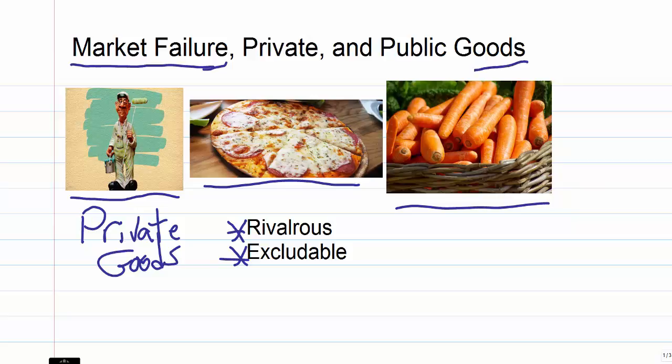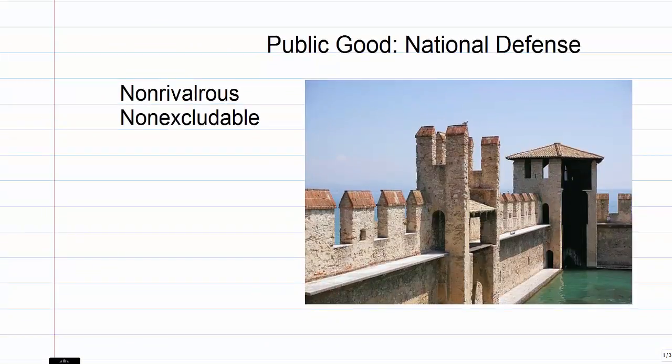Now let's talk about public goods. This is where the market failure idea comes in. Generally with a public good, public goods are not going to be provided unless the government provides them. Now why is that? Well they're the opposite of private goods.